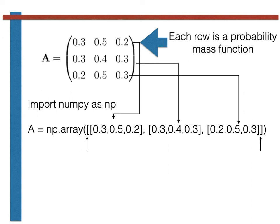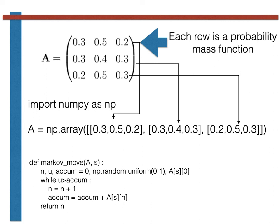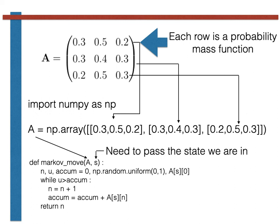Once we have set up our transition matrix in Python, we can write a function to generate the next step in our Markov chain. This function works exactly like the function we just wrote for sampling multinomial trials. Importantly, however, the function now has two arguments: A, the transition matrix, and S, the state we are currently in. The fact that we pass the current state to the function shouldn't surprise us — we know from the Markov property that future behavior depends on the current state. If we didn't need to provide the current state, we would have serious doubts as to whether what was being sampled really was a Markov chain.